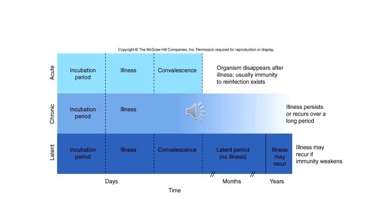Looking at this slide, you can see different types of infections: acute, chronic, and latent. Acute infection has a short time period with rapid manifestation and a short incubation period, followed by illness and either recovery or death. In chronic infection, the incubation period and illness are prolonged. In latent infection, after incubation, illness, and convalescence there is a latent period — the illness may recur. Most viral infections and a few bacterial infections cause latency.